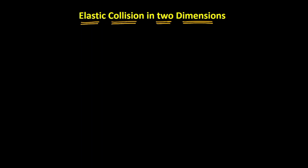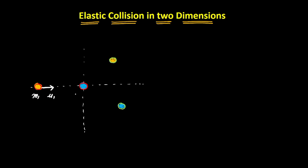Now that we have a basic understanding of what collisions are, let us understand elastic collision in two dimensions. Let's take a situation where there is a ball with mass m1 moving in a certain direction with a velocity of u1, and this ball collides with another ball of mass m2 that is at rest.